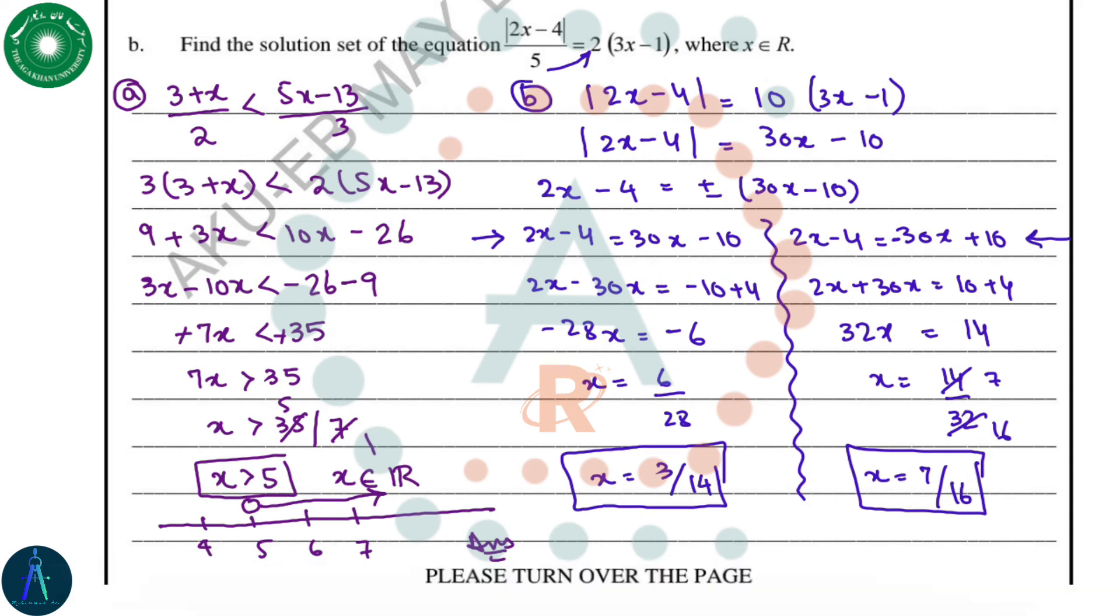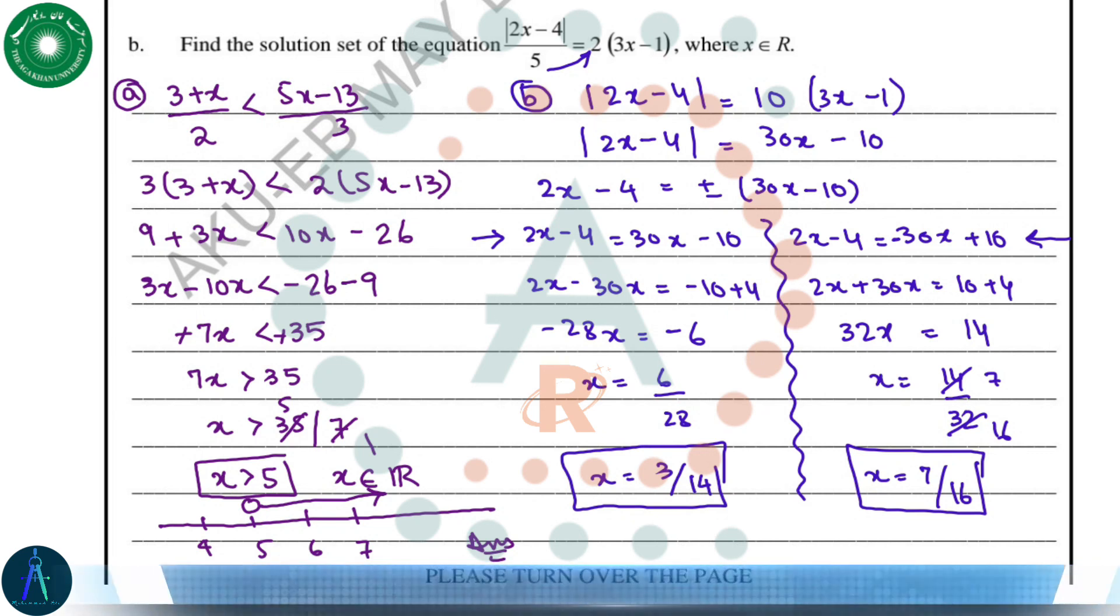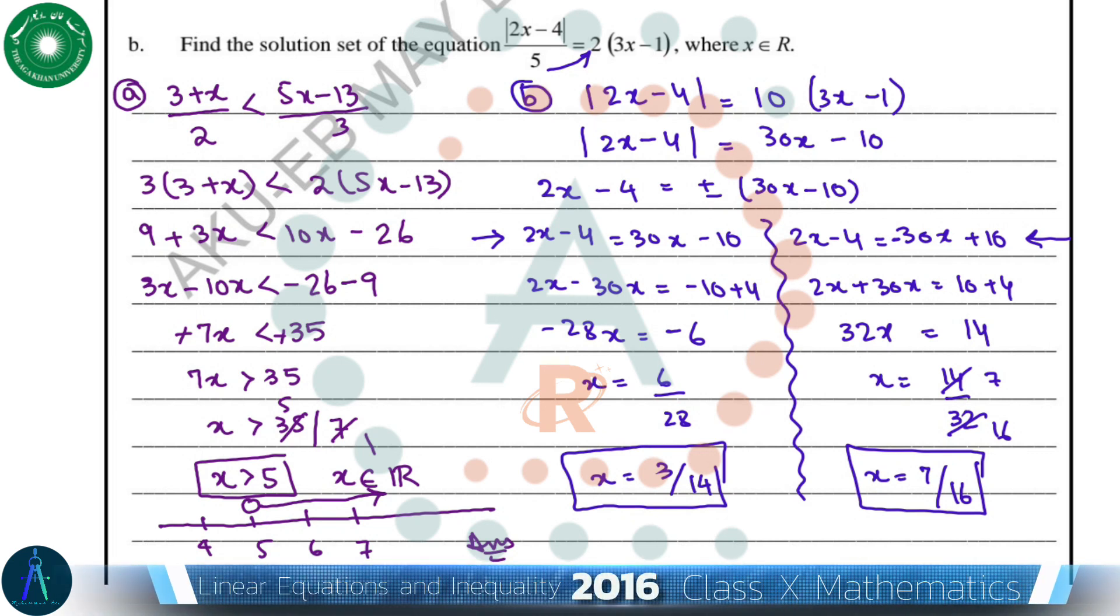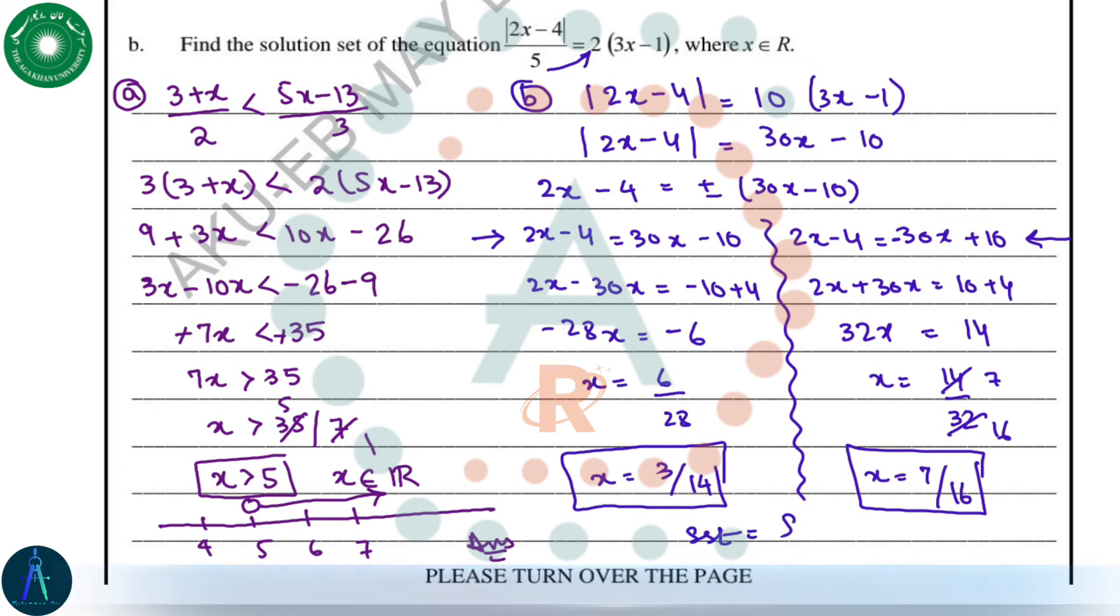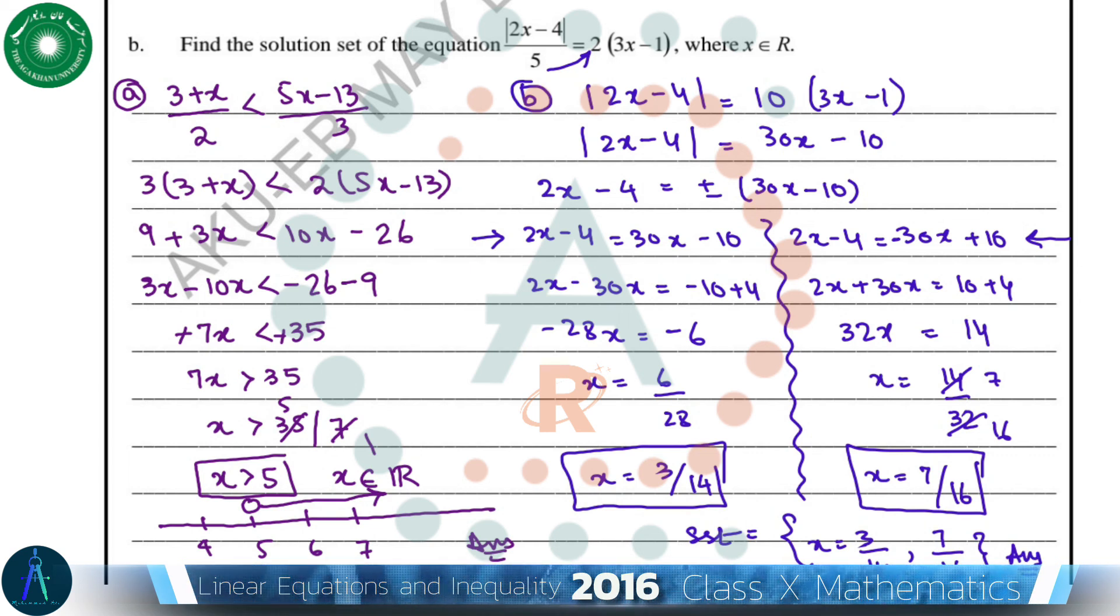After solving we get x = 14/5. Then when we expand this modulus with negative signs we get the answer x = 3/14 and 7/16. So the solution set for this question is x = 3/14 and 7/16. This is the answer of the second part.